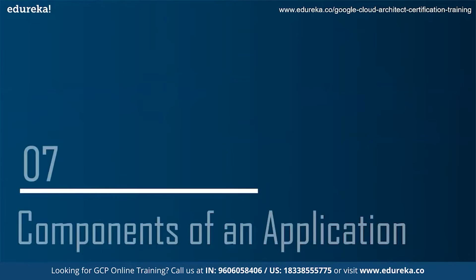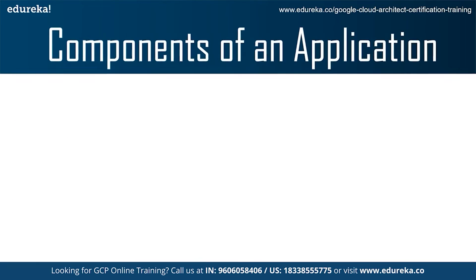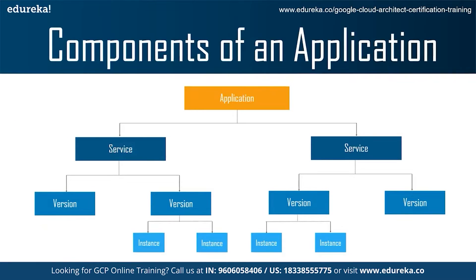Now let's look at the components of an application. The App Engine application is created under your Google Cloud project. When you create an application resource, the App Engine application is a top-level container that includes the service, version and instance resources that make up your app. When you create your App Engine app, all your resources are created in the region that you choose, including your app code along with a collection of settings, credentials and your app's metadata.